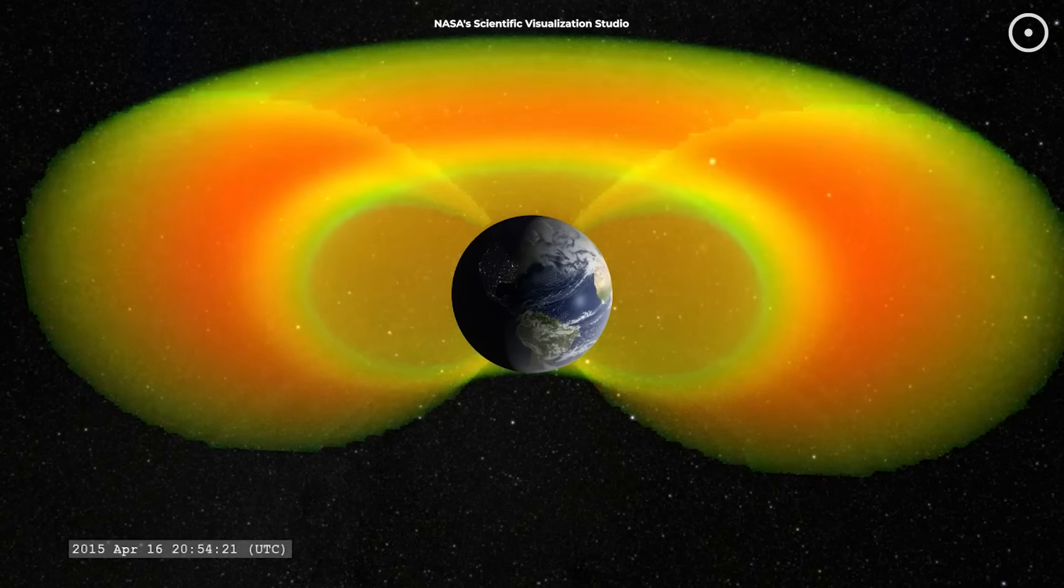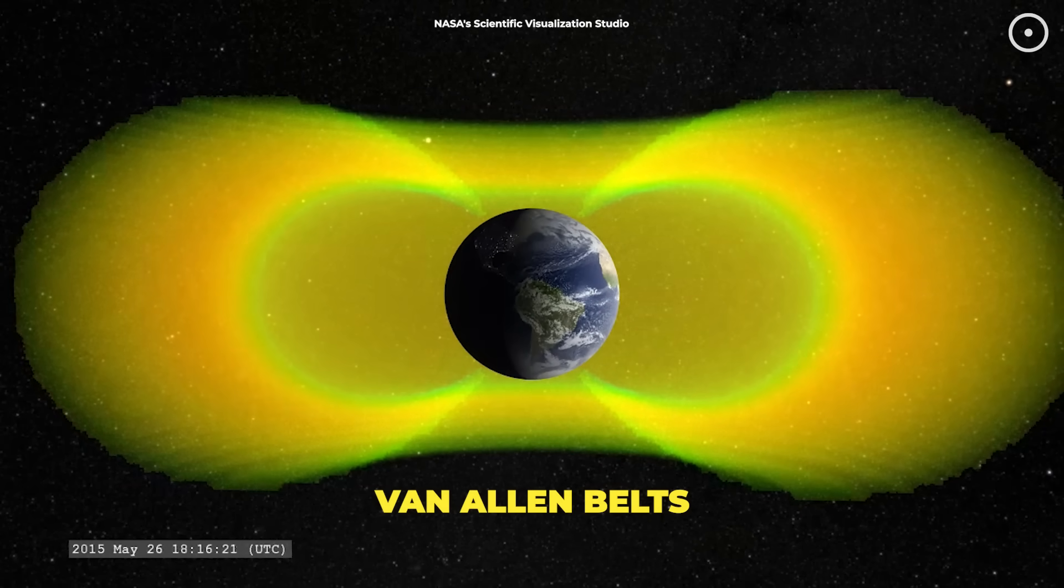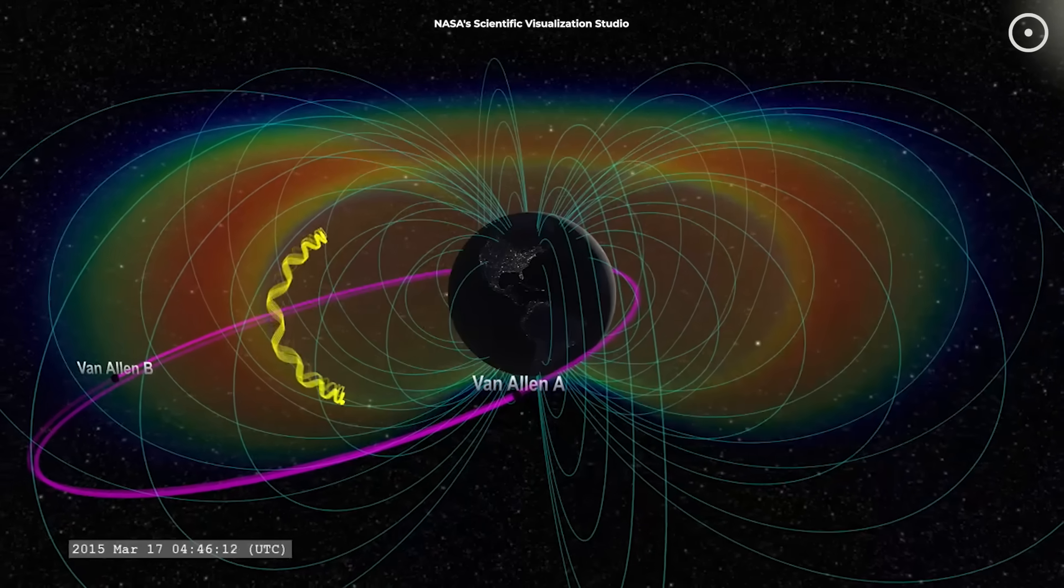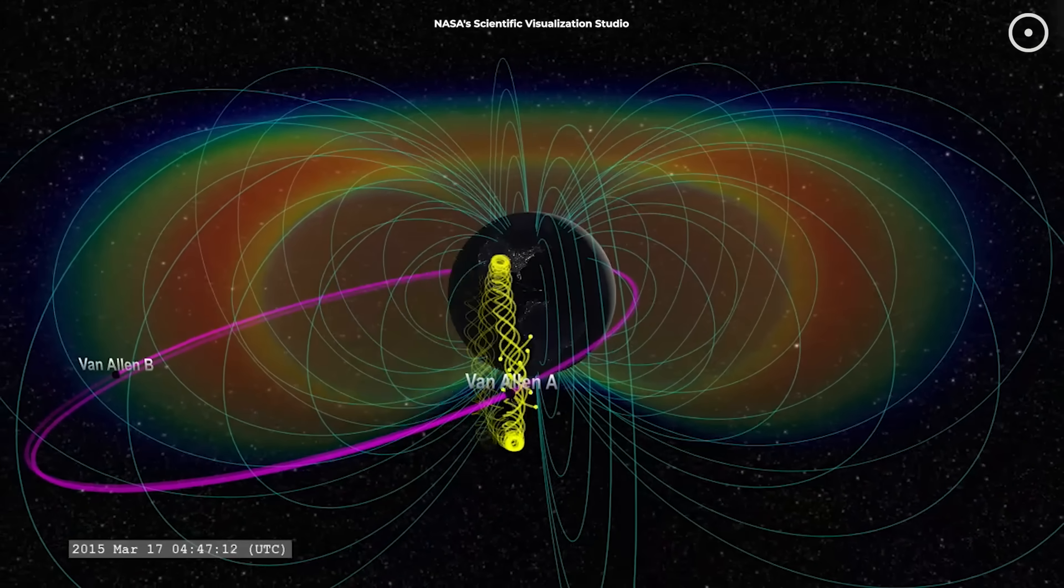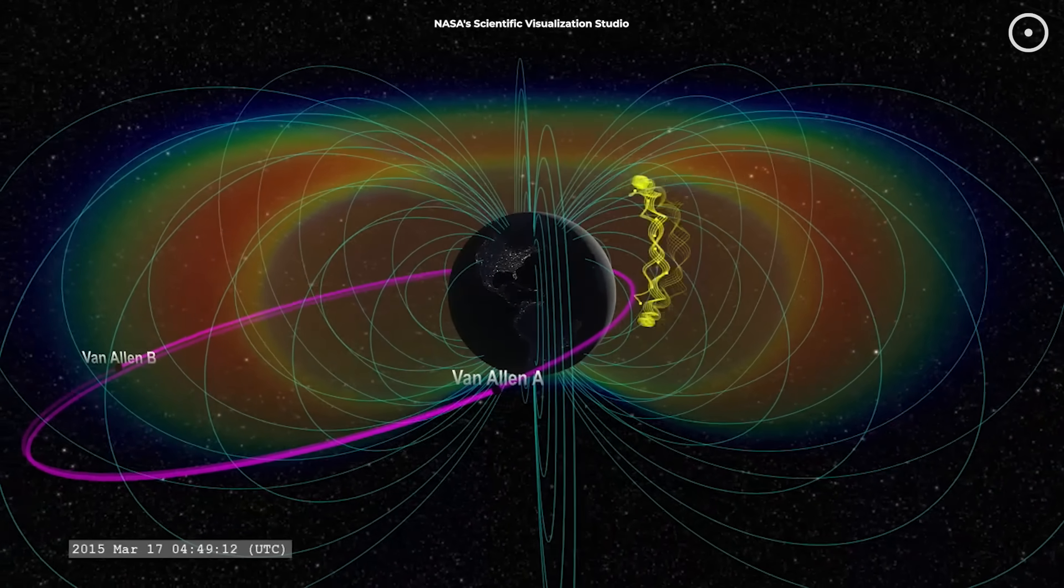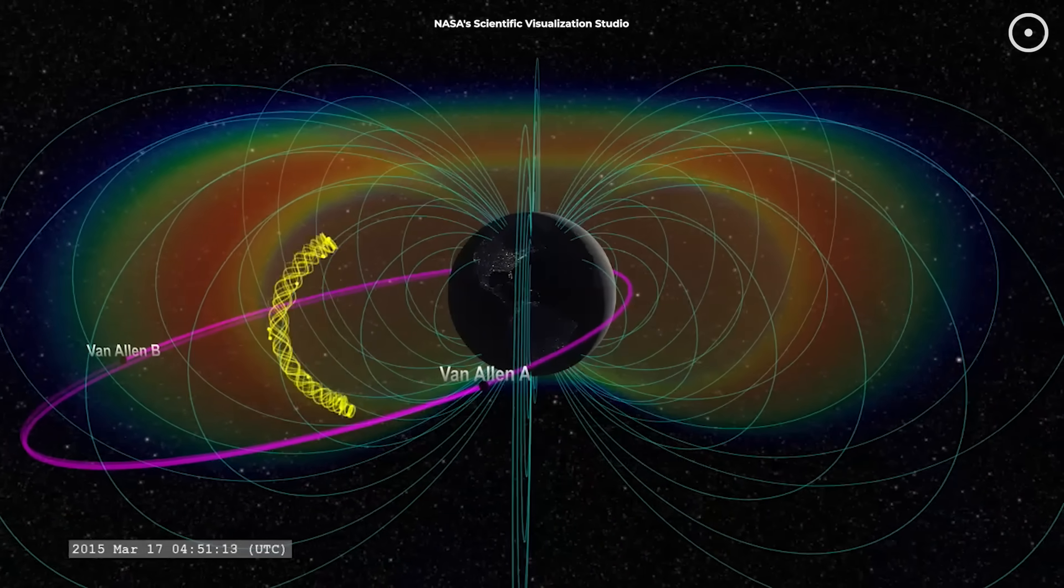But here's the really cool part. This magnetic field creates two giant donut-shaped zones called the Van Allen belts, which trap harmful radiation from space. Think of them as Earth's very own particle accelerator, catching cosmic rays and solar particles before they can reach us. But this shield isn't as stable as we once thought.